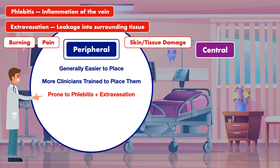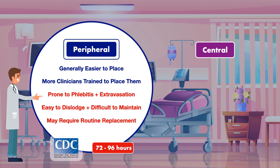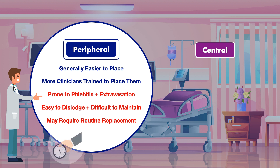A second concern with peripheral catheters is that they are easy to dislodge, difficult to maintain for long periods, and may require routine replacement as a strategy to reduce risk for infection. This is rooted in a standing recommendation from the CDC to replace peripheral IVs every 72 to 96 hours, which some medical institutions still follow. However, there is emerging evidence that lines can be changed only when there is a sign of irritation or malfunction. Regardless, the overall lack of reliability can lead to undesirable delays in feeding while also contributing to pain, discomfort, and frustration for the patient.